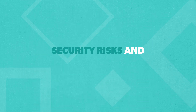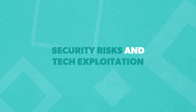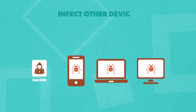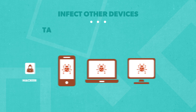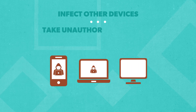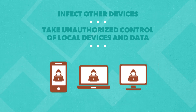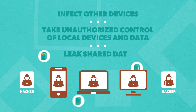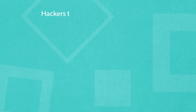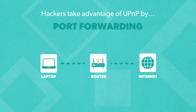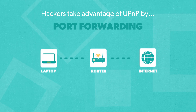But why is UPnP still a security risk? Hackers could use UPnP to infect other devices with malware or viruses. They use external devices to take unauthorized control of local devices and data, and they can leak shared data. Hackers take advantage of UPnP by port forwarding — this redirects traffic from your router to the attacker's server, enabling them to launch attacks from within your own network.